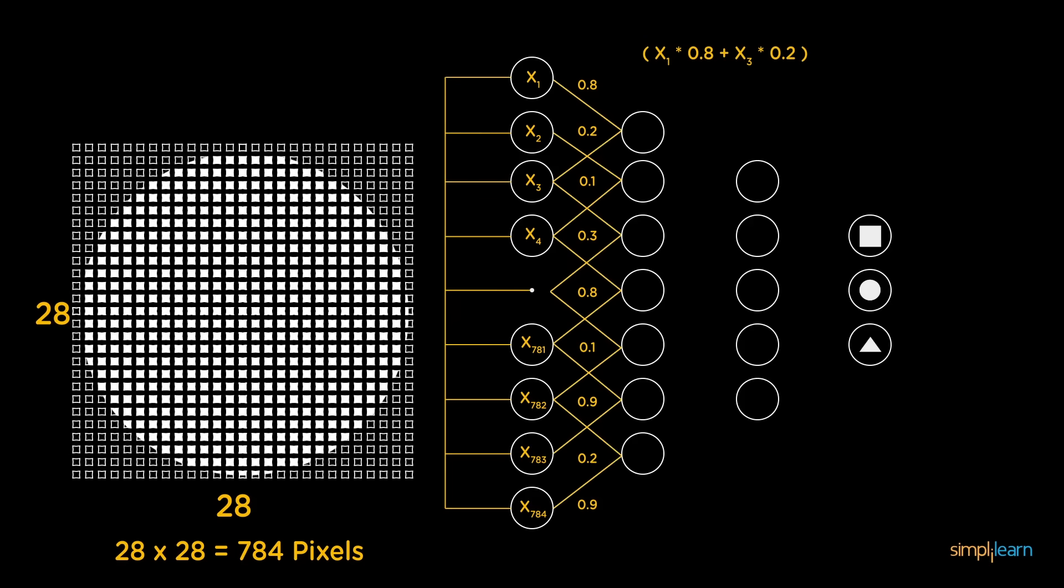Each of these neurons is associated with a numerical value called the bias, which is then added to the input sum. This value is then passed through a threshold function called the activation function. The result of the activation function determines if the particular neuron will get activated or not.